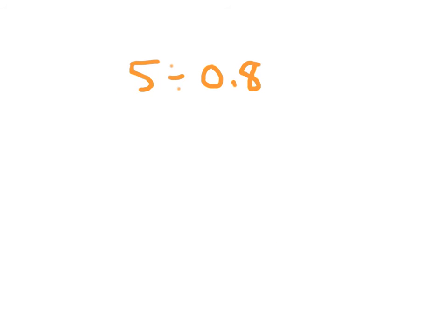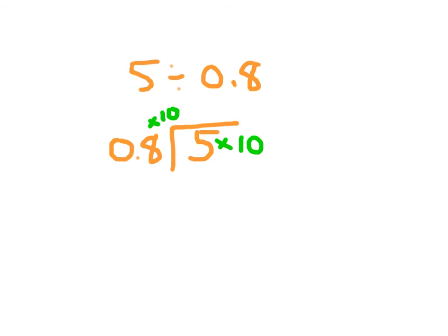I'll show you another type of problem you might encounter: 5 divided by 0.8. What we do is clear out the decimal — so we multiply by 10 in the numerator and denominator. Rewriting our division problem, we have 50 divided by 8. Now 8 does go into 50 — but there's still more to divide. 8 goes into 50 six times. 6 times 8 is 48. And 50 minus 48 is 2.